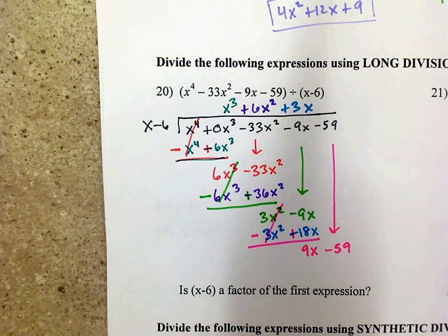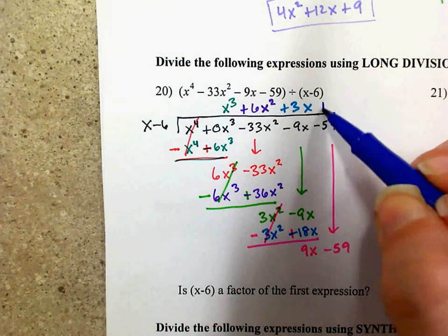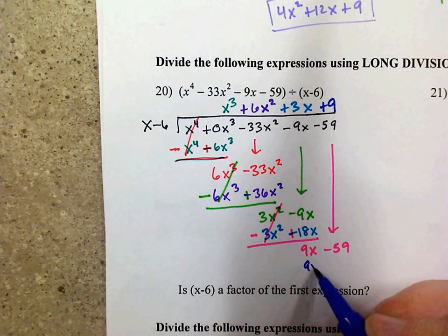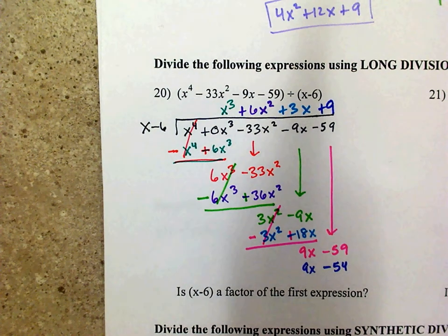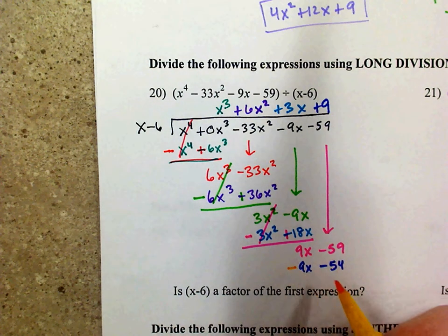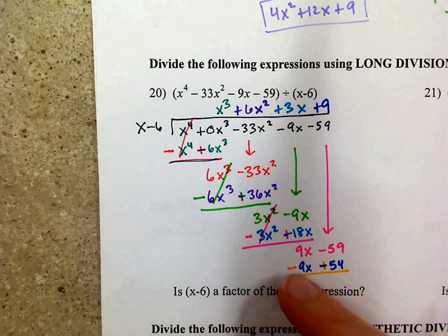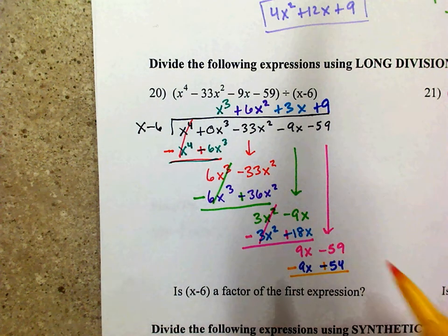Now I need 9x and I've got 1x, which means I need a coefficient of 9. 9 times x is 9x, and 9 times negative 6 is negative 54. Last step: subtract by changing the sign. It's not always going to be minus and plus — you always have to change the signs. I end up with negative 5.